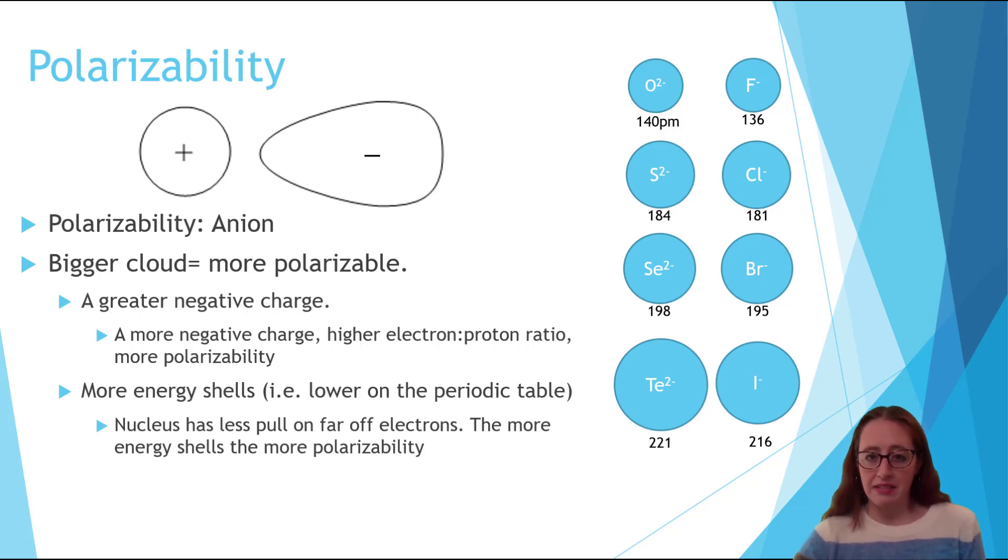Second, the size of the cloud. The more energy shells an ion has, the more shielding it has, and the more polarizability it has.